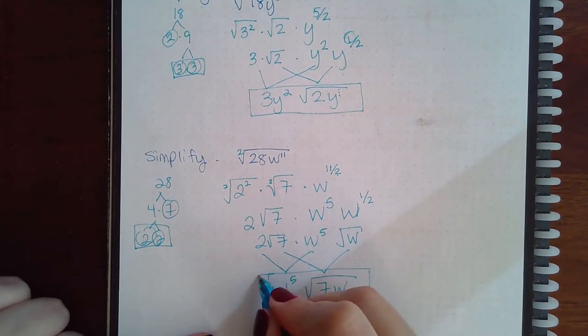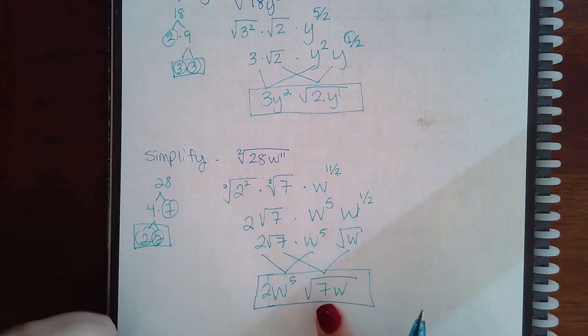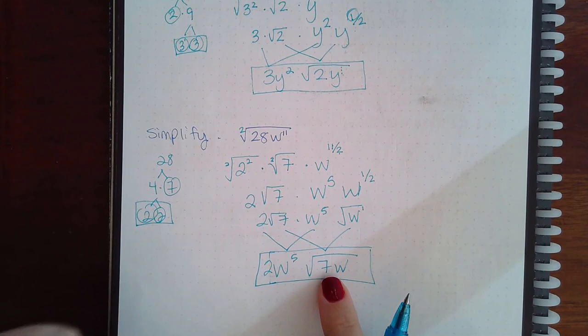So those will go together outside. And then the 7 and the w are inside the square root. So those get multiplied together inside the square root.